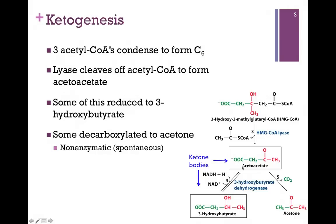These two products in boxes, acetoacetate and 3-hydroxybutyrate, are the ketone bodies. You'll notice these are both acids — they both have carboxyl groups. So if ketogenesis is taking place in excess, we generate many of these ketone bodies, and that's a case of ketoacidosis.